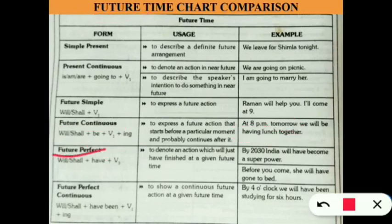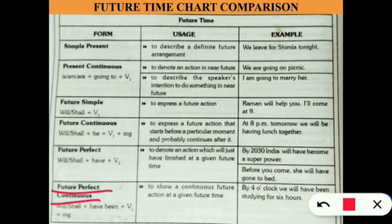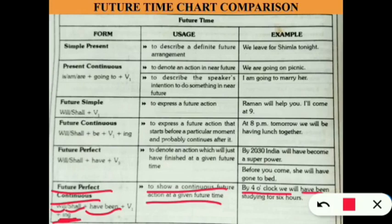Future perfect tense uses will/shall + have + verb 3 to denote an action that will just have been completed at a given future time. Example: 'By 2030, India will have become a superpower,' 'Before you come, she will have gone to bed.' Future perfect continuous uses will/shall + have + been + verb 1 with -ing to show a continuous future action at a given time. Example: 'By four o'clock, we will have been studying for six hours.'